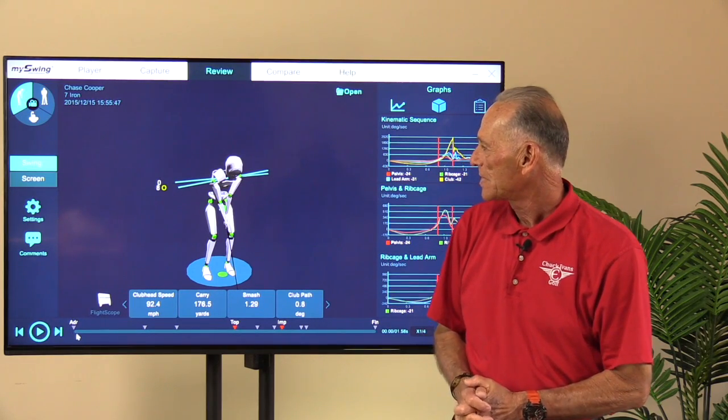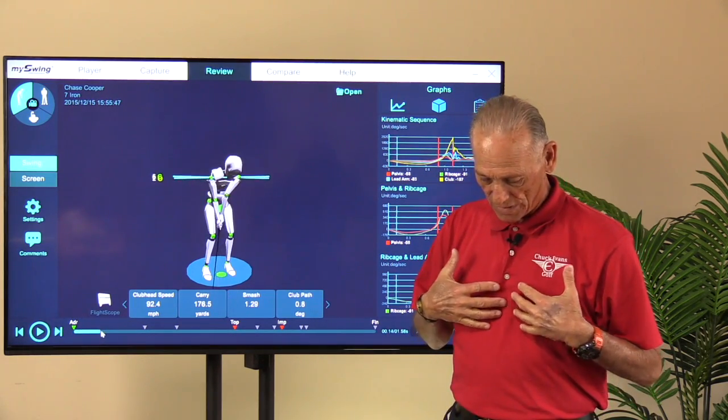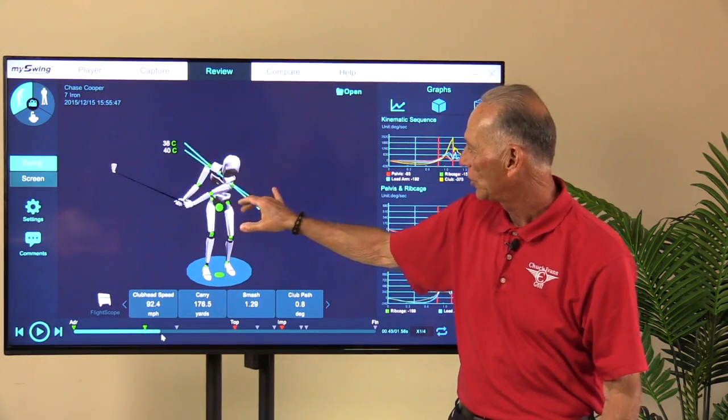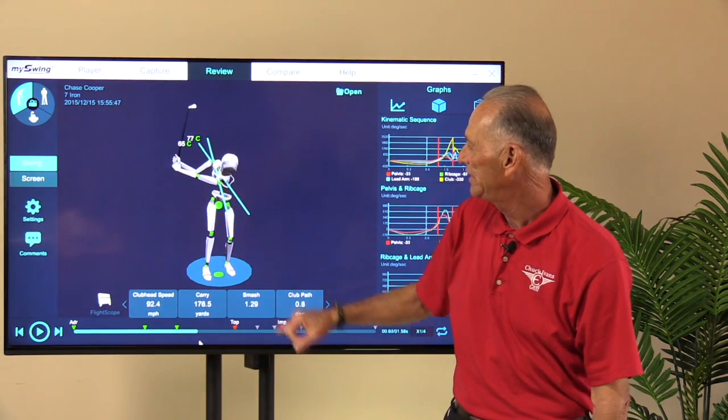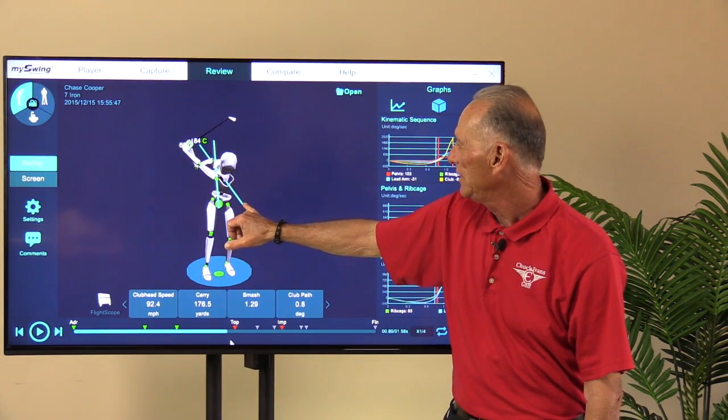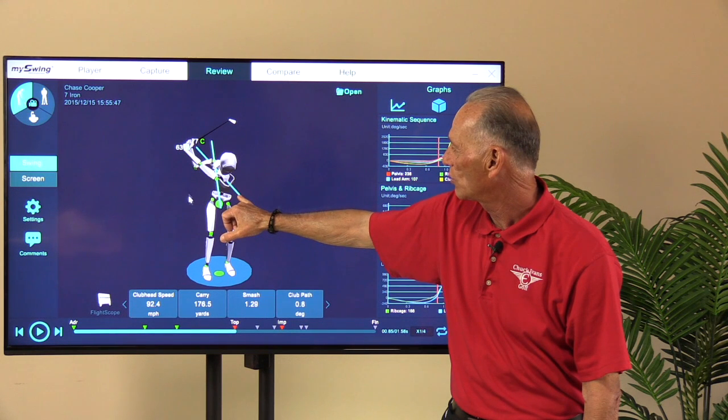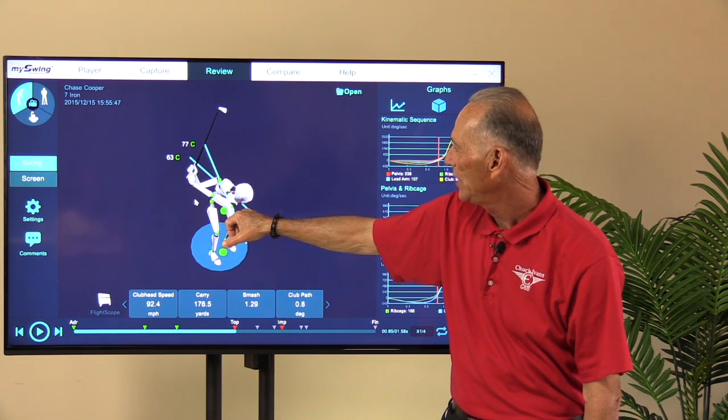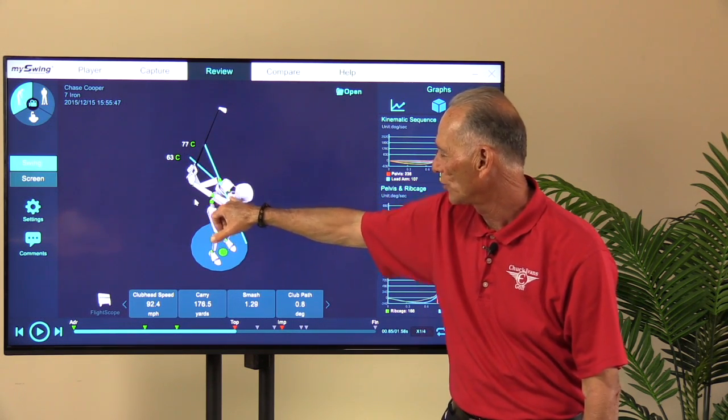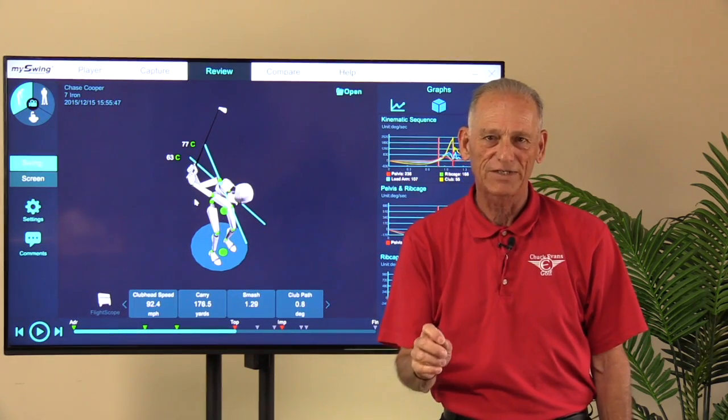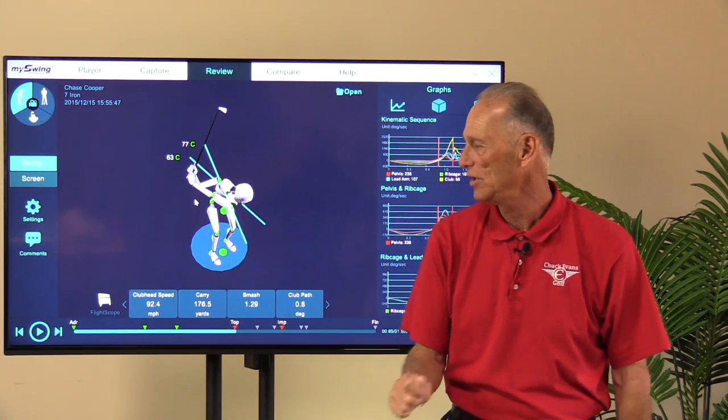As we take this up, we can watch how the ribcage and the shoulders are turning a little bit differently. So as you get to the top here, and I see right now we're measuring the ribcage versus the shoulder angle. That's really hard to do on video. In fact, it's almost impossible to do on video.